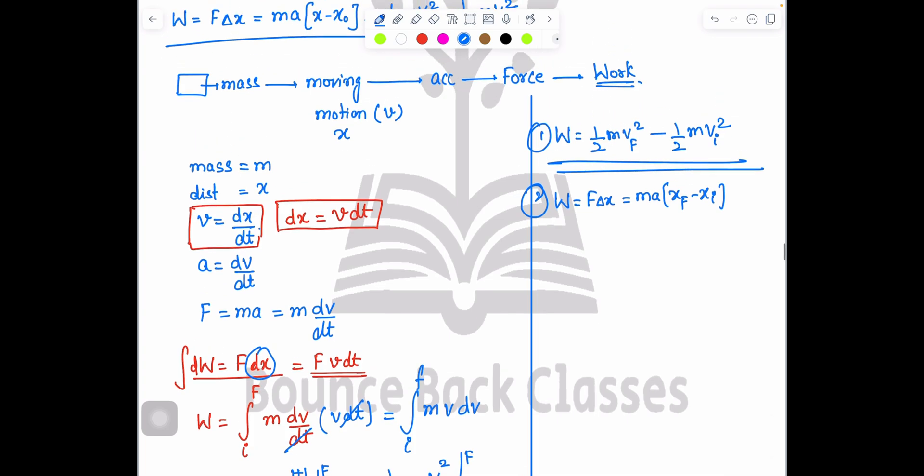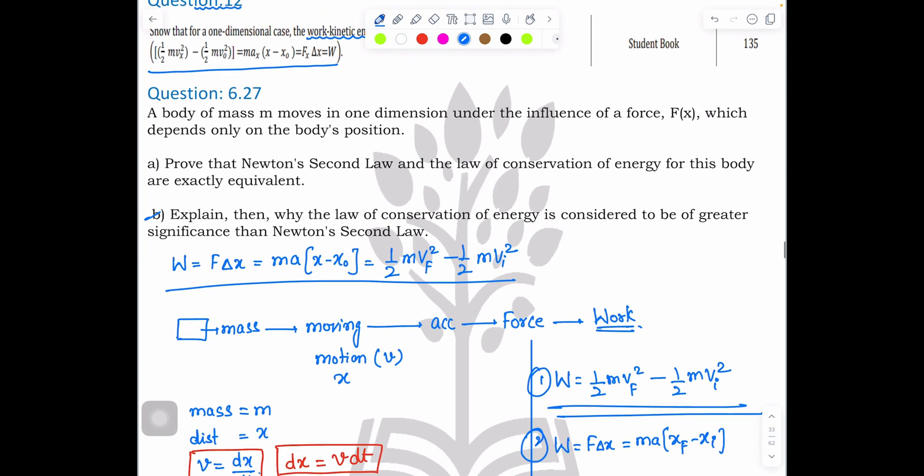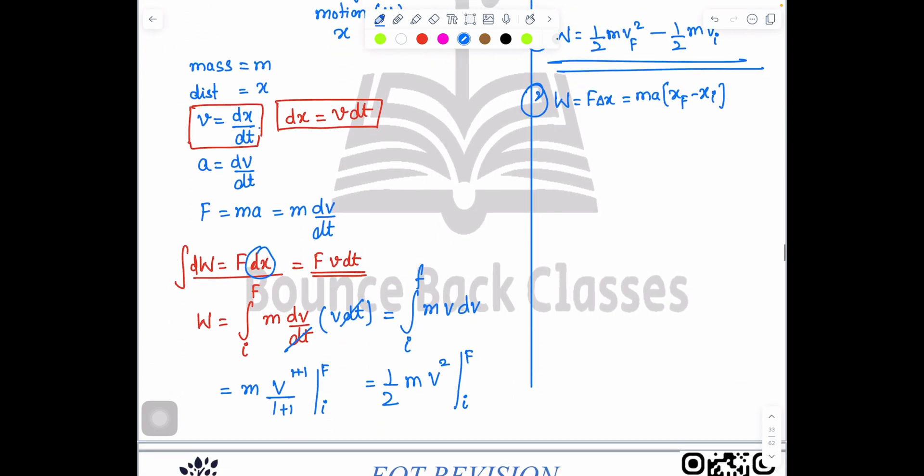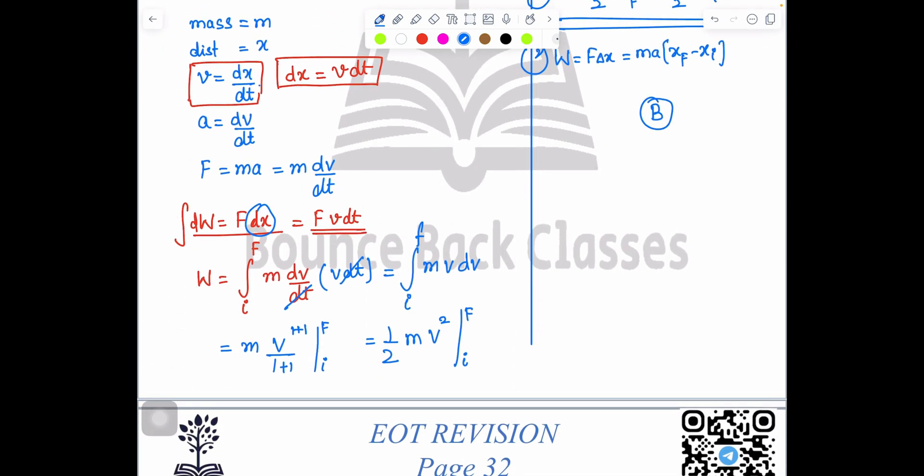Now let's move to question number two. Explain then why law of conservation of energy is considered to be of greater significance than Newton's second law. Part b, because in two cases: number one, subatomic particles, and second, when velocity is nearly equals to c, which is speed of light.